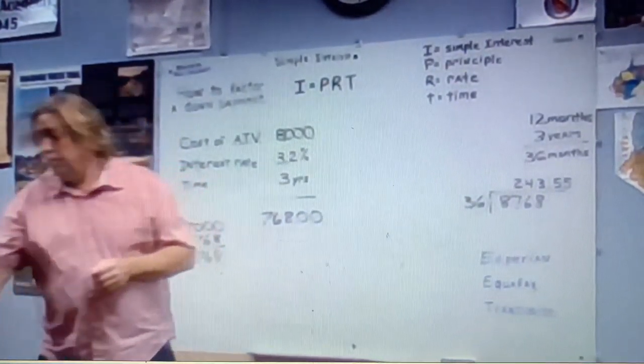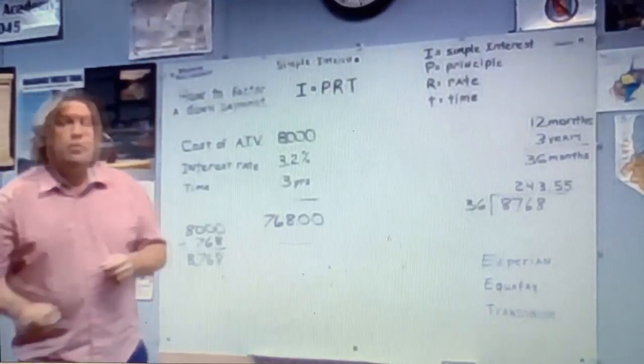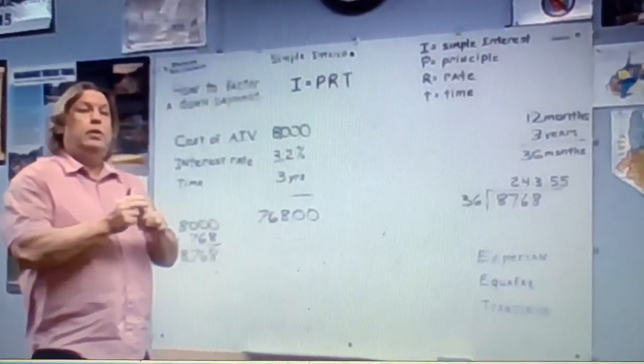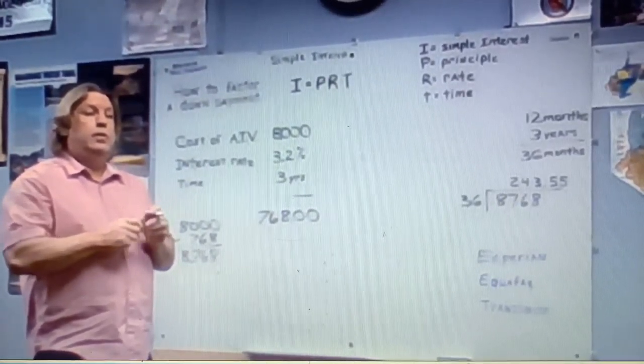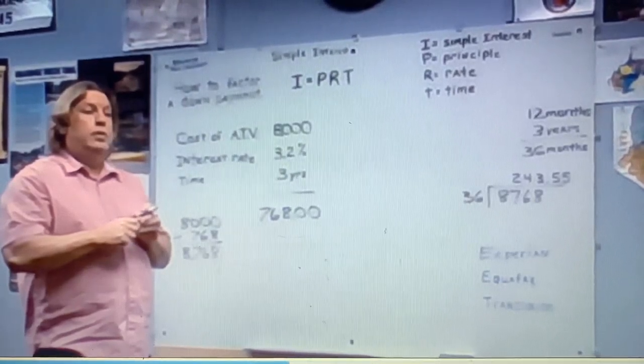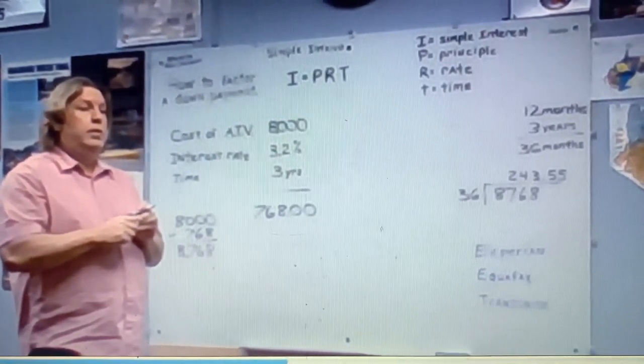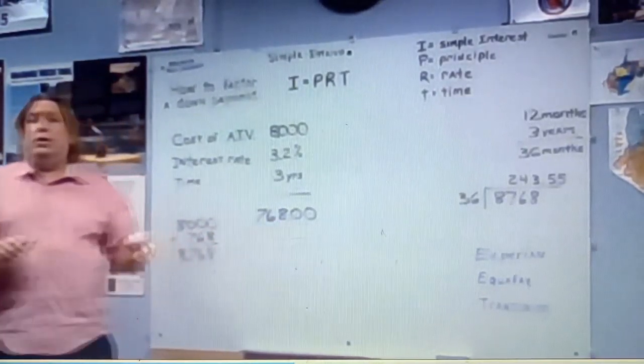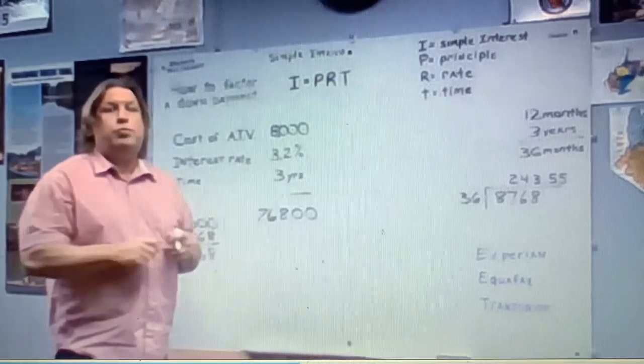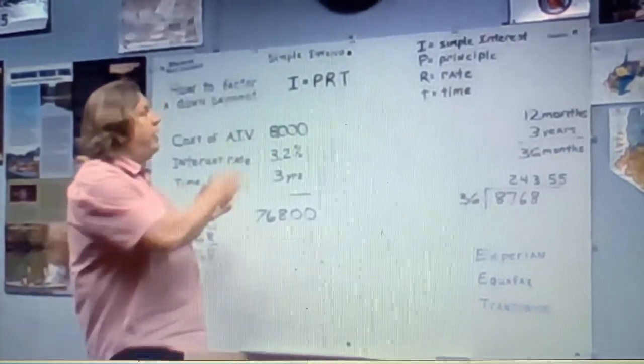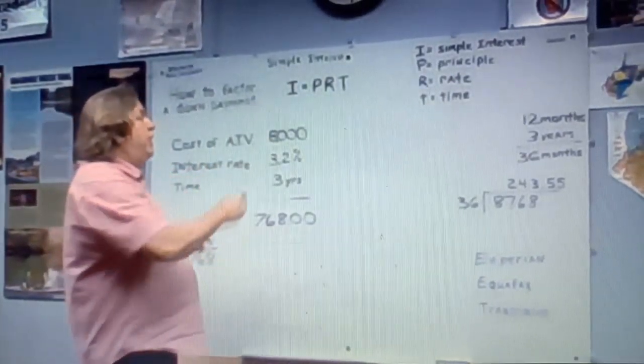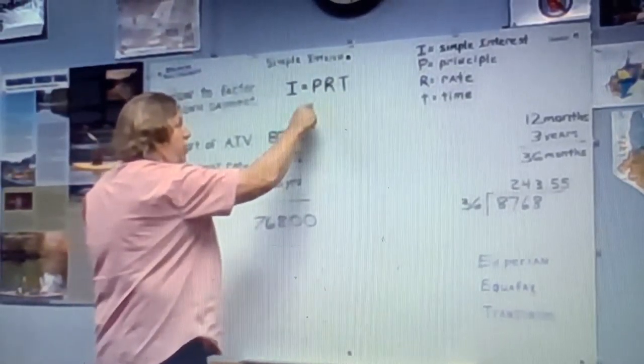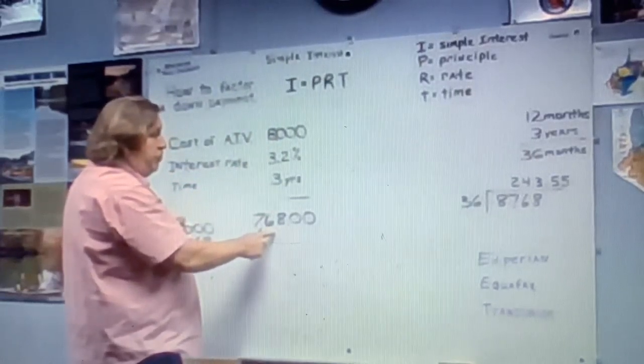On your calculators. Did you get this? $768. $768. That's what the simple interest is. All right, now we've got all of our variables plugged in. We know the principle. We know the rate. We know the time. And by multiplying these three things together, we can get the simple interest.